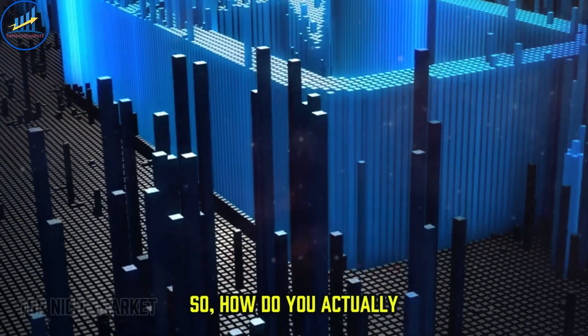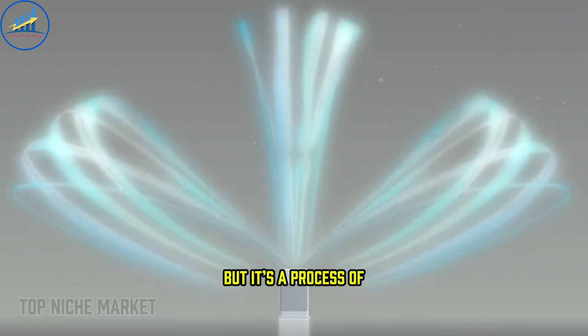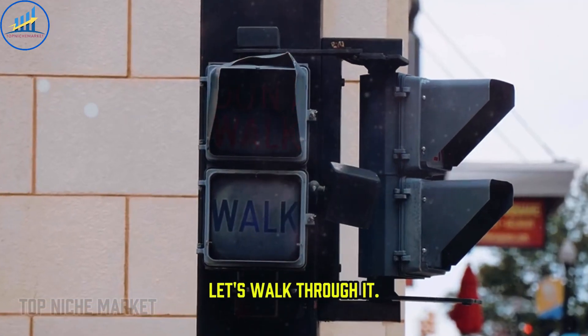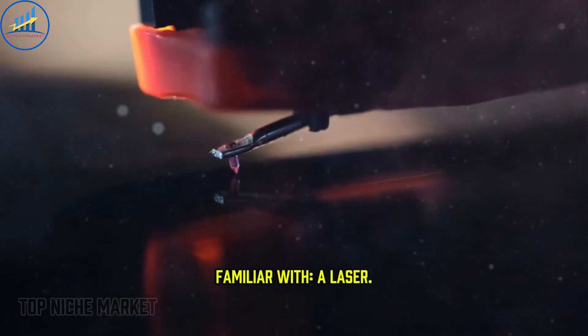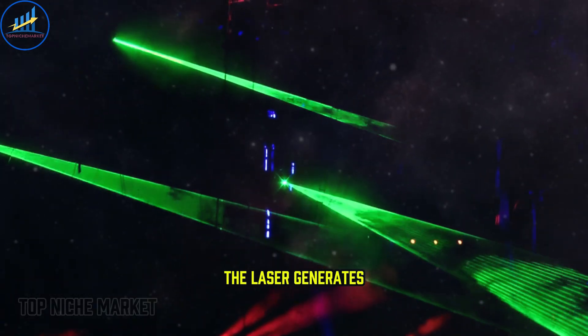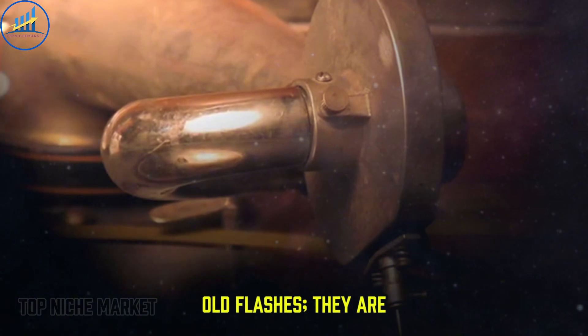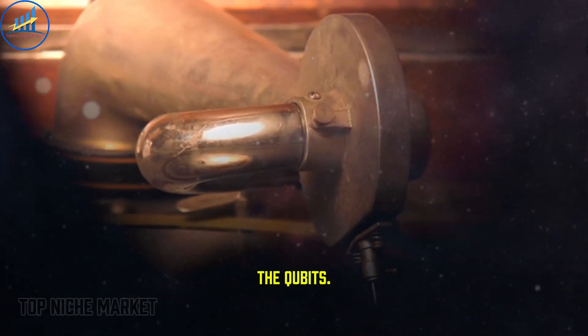So how do you actually compute with a beam of light? It sounds like magic, but it's a process of remarkable elegance. Let's walk through it. It all begins with a workhorse you're already familiar with: a laser. The laser generates precise pulses of light. These aren't just any old flashes. They are meticulously crafted to be the raw material for the qubits.